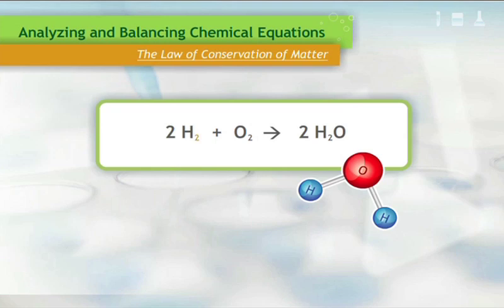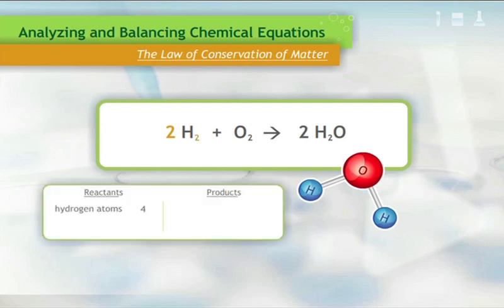On the left side, hydrogen has a subscript of two, meaning there are two atoms per molecule. There is a coefficient of two, meaning there are two molecules of hydrogen. Multiplying through, we find a total of four hydrogen atoms on the left side. There are two atoms of oxygen on the left side.